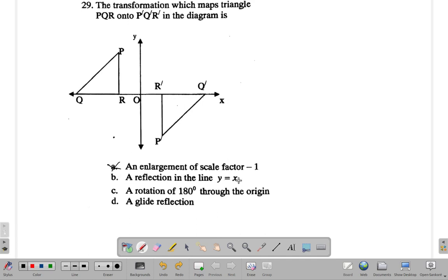Is it a reflection in the line y equals x? The line y equals x would look something like this. But if it's being reflected over the line, Q would turn up somewhere up here, P would turn up somewhere along here, R would be somewhere about here. So that wouldn't be the case.